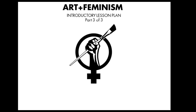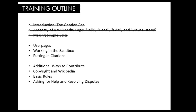Welcome to the third installment of the Art and Feminism Introductory Lesson Plan video series. We've already learned how to make simple edits to Wikipedia pages, and we've worked in our sandbox and learned about adding citations. Now we're going to give you some best practices to follow as you go forward editing Wikipedia articles.